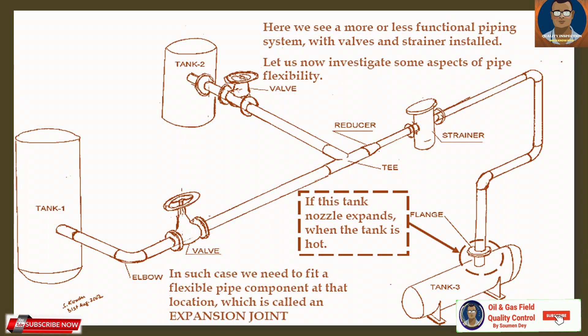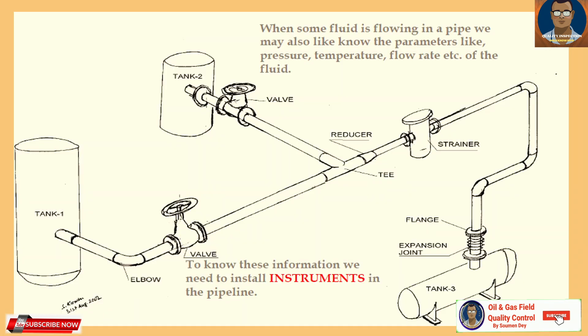Here we see a more or less functional piping system with valves and strainer installed. Let us now investigate some aspects of piping flexibility. If a tank nozzle expands when the tank is hot, we need to fit a flexible pipe component. When temperature changes there is a possibility of expansion, so we install a component called an expansion joint.